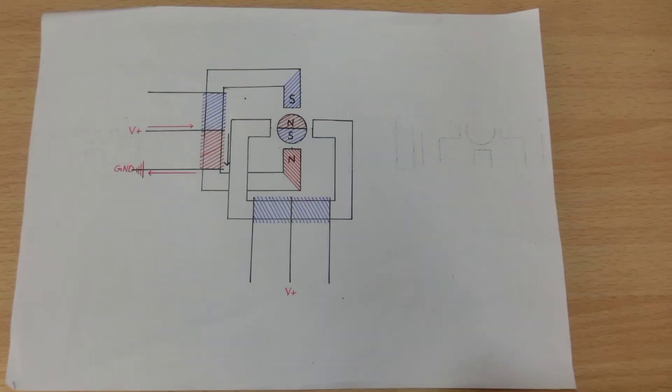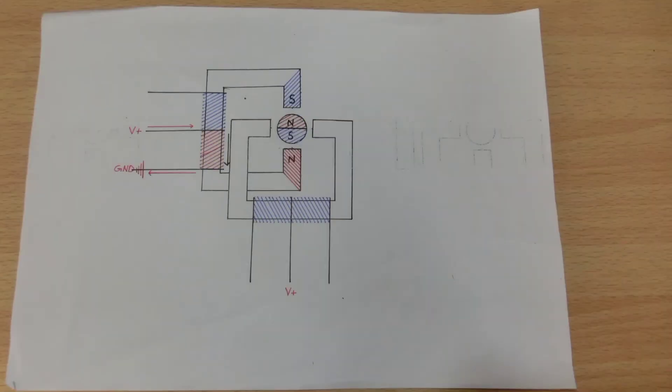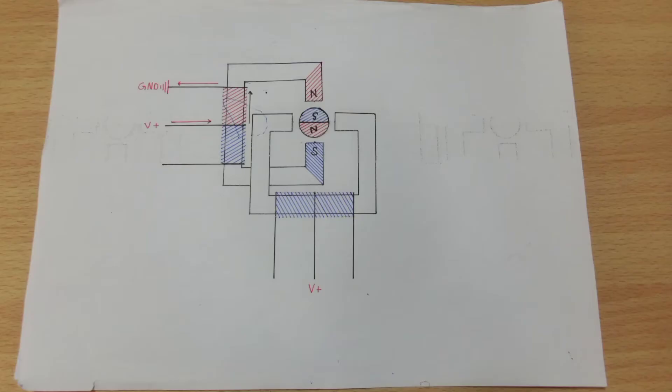If we want to keep the motor running, we have to keep repeating this pattern. To make the motor move in the opposite direction, we only need to reverse this pattern.